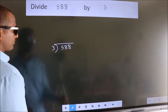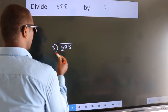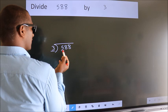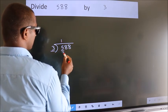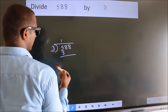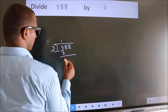Next. Here we have 5, here 3. A number close to 5 in 3 table is 3 1s 3. Now, we should subtract. We get 2.